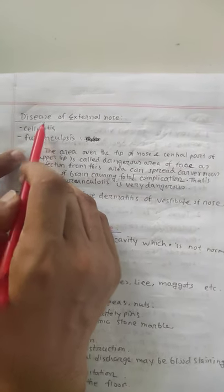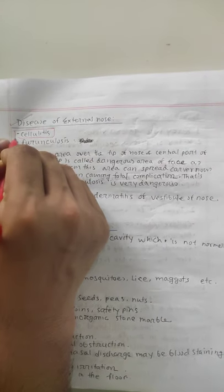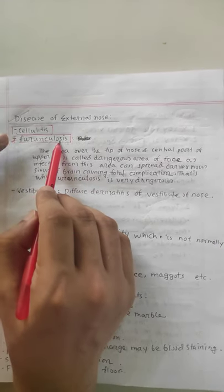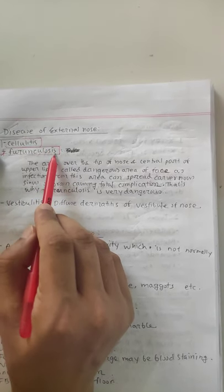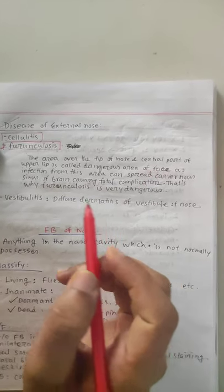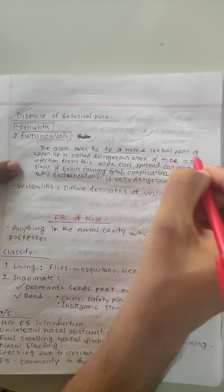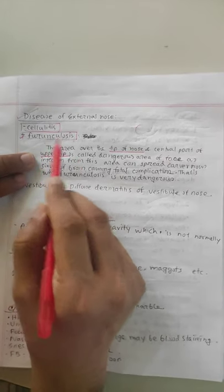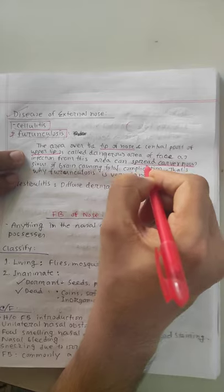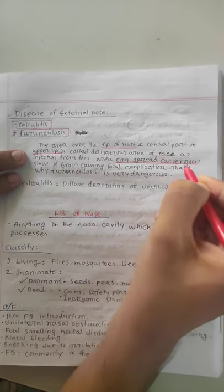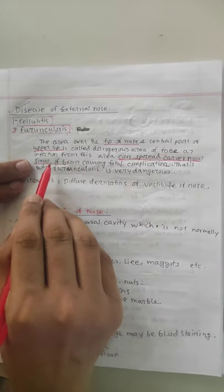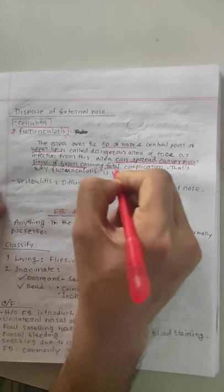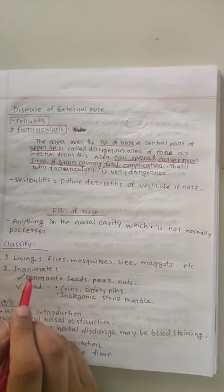The diseases of the external nose are cellulitis and number two is furunculus. Furunculus is the inflammation of the hair follicle of the vestibule of the nose. This is why the nose area is dangerous. The area over the tip of the nose and the central part of the upper lip, this part of the face is called the dangerous area of the face. It can spread backward through the hematogenous pathway to the cavernous sinus and causes cavernous sinus thrombosis. It also causes infection to the brain, which is a fatal complication. That's why furunculus is very dangerous.